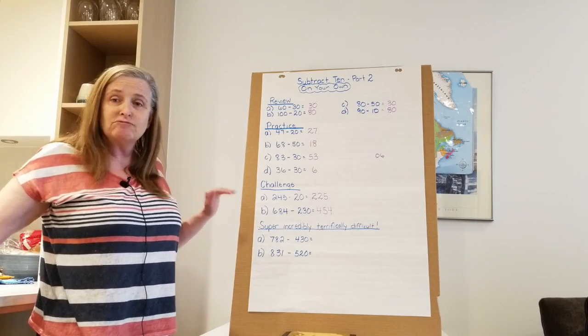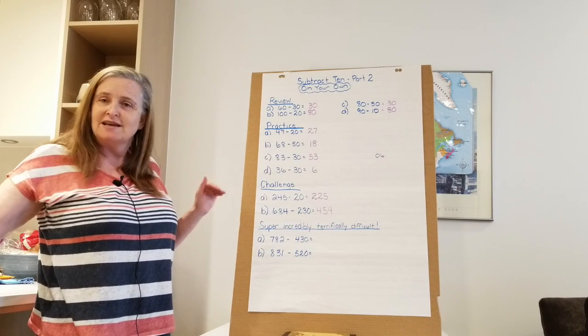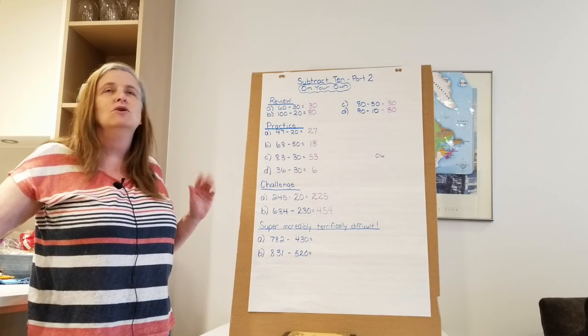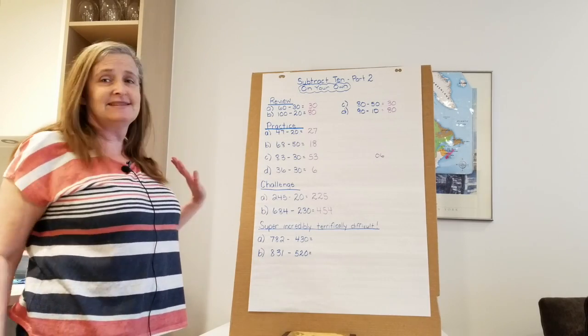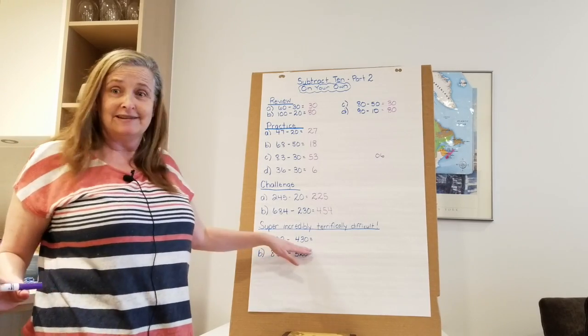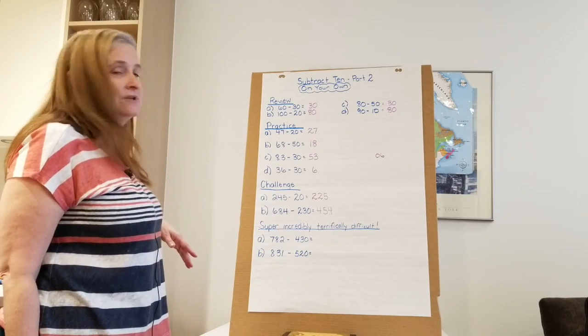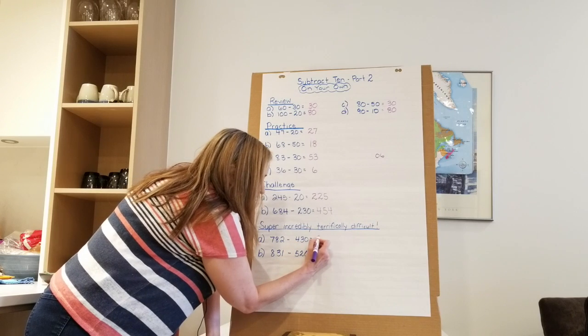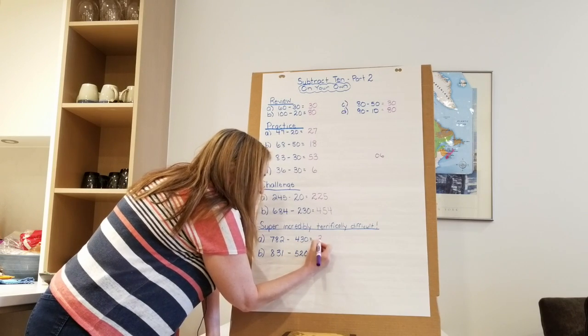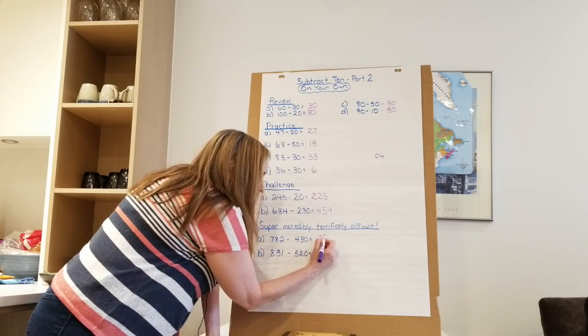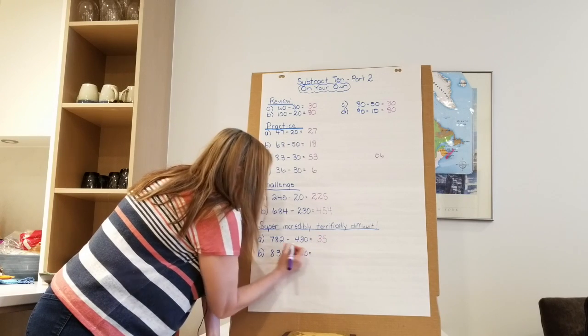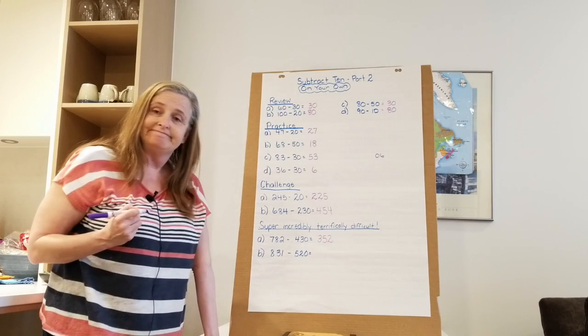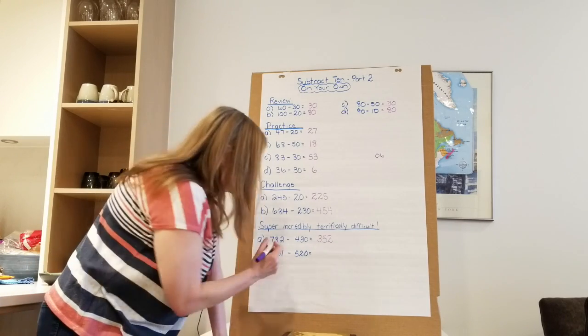Super incredibly, terrifically difficult question. That reminds me of that book. The no good, very bad, terrible, horrible, no good, very bad day. Instead of being bad, it's good. Okay. 782 take away 430. So 700 take away 400 is 300s. 8 tens take away 3 tens, 8 tens is 5. 2 ones take away 0 ones is 2. Am I right Mr. Marta? You are.